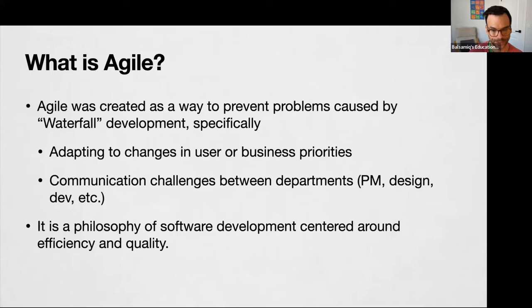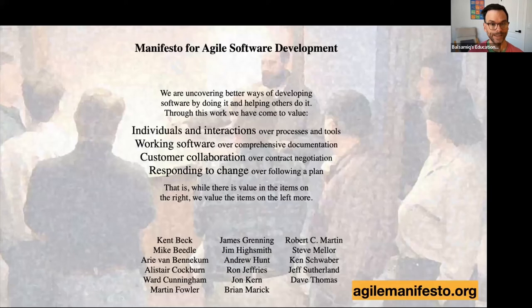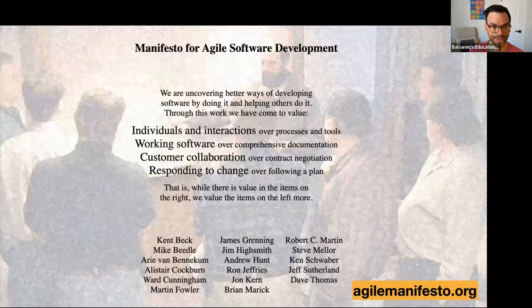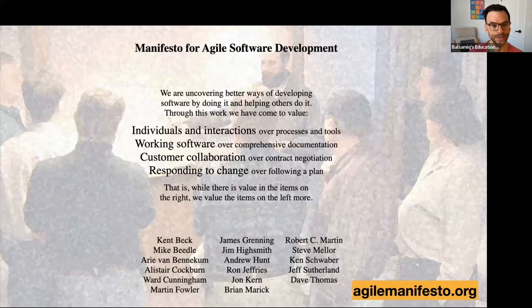Everything was very linear — kind of throwing things over the wall to the next department. But in 2001, a bunch of senior software development and business people got together to come up with a better way of making software. What came out of that was called the Manifesto for Agile Software Development. This is the website they made for it — it's very old but still around. It's actually very short and easy to read. Agilemanifesto.org — I really recommend reading it.